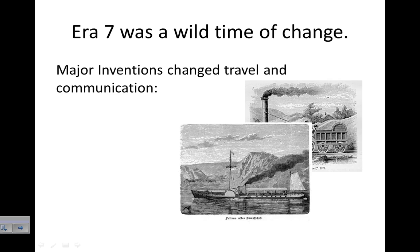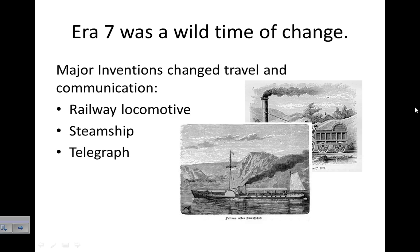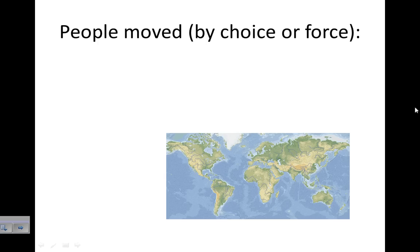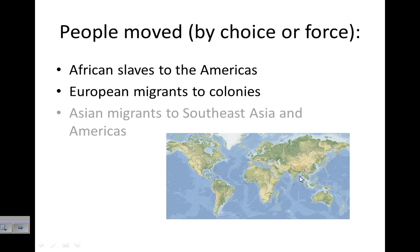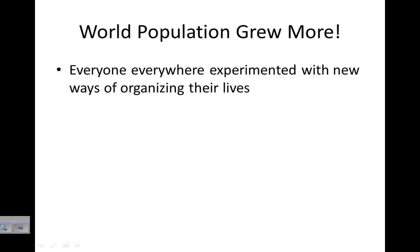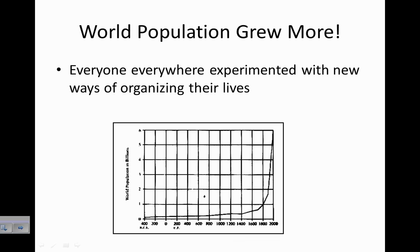Era seven was a wild time of change. We had major inventions that changed travel and communication such as the steamboat, the railway locomotive, the telegraph, and eventually the telephone. People moved either by choice or by force — we had African slaves forced to move to the Americas, European migrants who moved to colonies in the Americas and parts of Africa, and Asian migrants to Southeast Asia and the Americas, mainly for work and labor. And the world population grew steeply during this time.